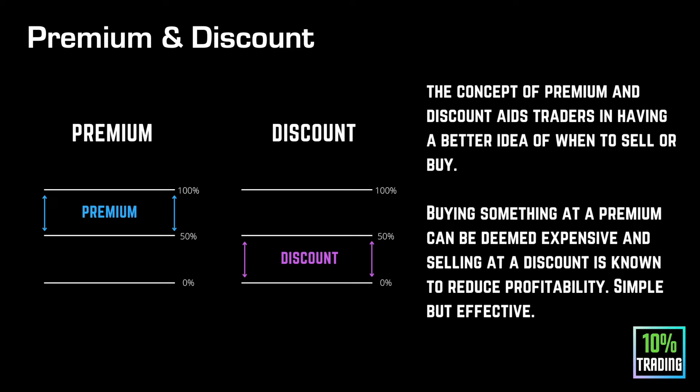The first concept is premium and discount — you probably hear this thrown around quite a bit. It's a very simple concept; I mentioned it in my last fibonacci video as well. Anything above the 50 is known as your premium and anything below the 50 is known as your discount. The concept of premium and discount aids traders in having a better idea of when to sell or buy. Buying at a premium can be deemed expensive, and selling at a discount reduces profitability.